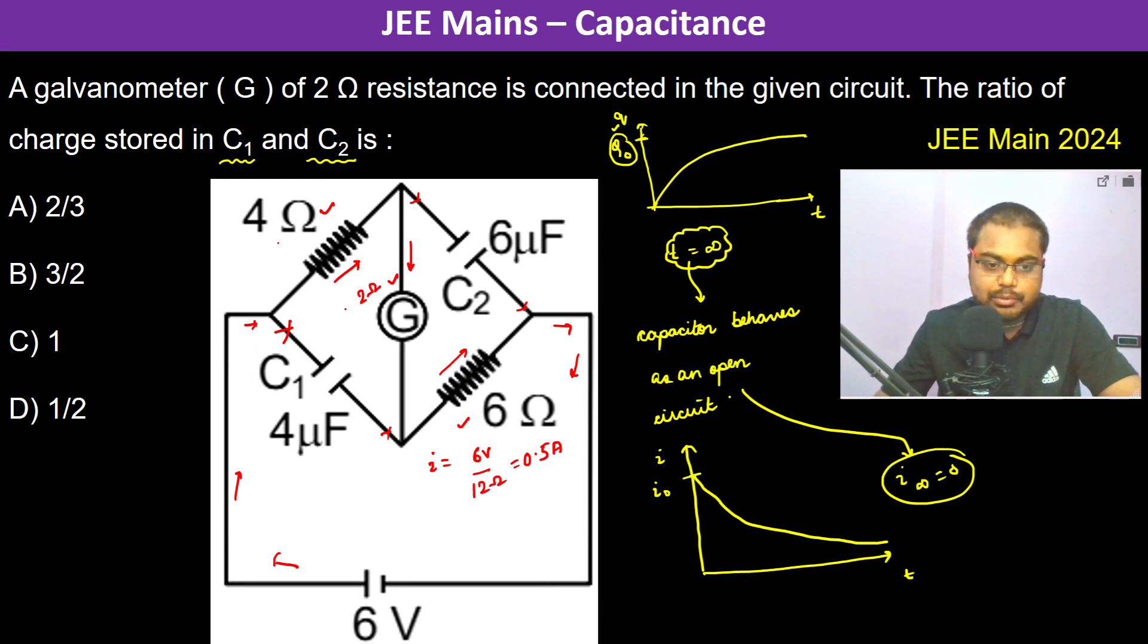Since it is 0.5 ampere, this is 6 volts so this also becomes 6 volts. This is 0 volt so this also becomes 0 volt. Now 6 volts and the current flowing is 0.5 ampere, so the potential difference across 4 ohm is going to be 4 times 0.5, that is 2 volts. So 6 volts minus 2 volts, that is 4 volts here.